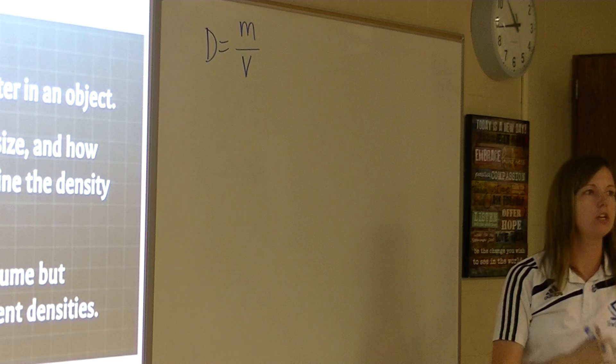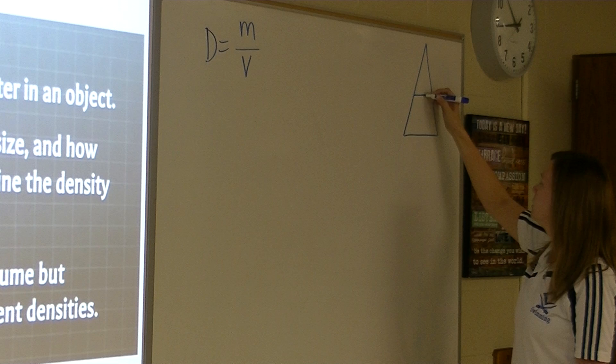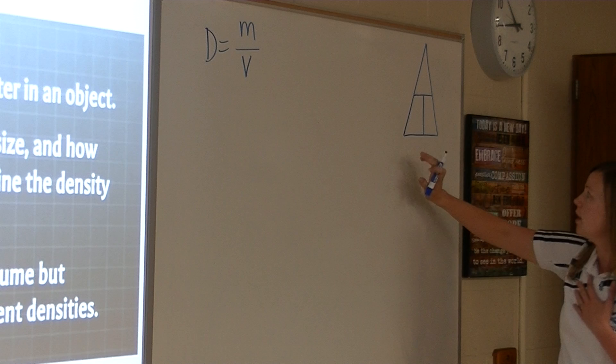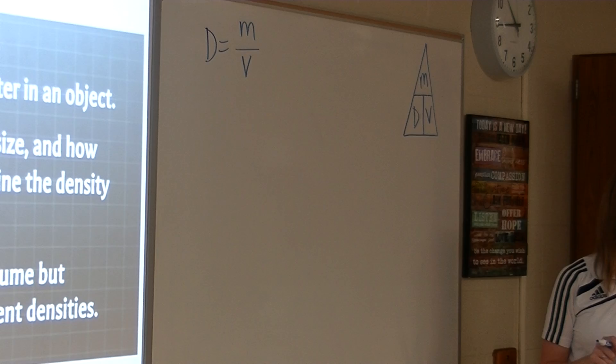What I'd like for you to do is draw a triangle on your paper, then draw a T to divide it into three different sections. We're going to fill in the variables from our formula: density equals mass divided by volume. Put D at the bottom left, M on the top, and V on the top right.